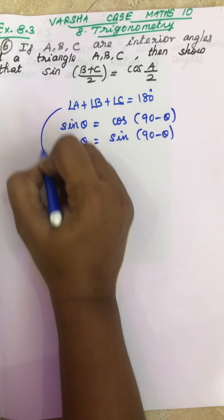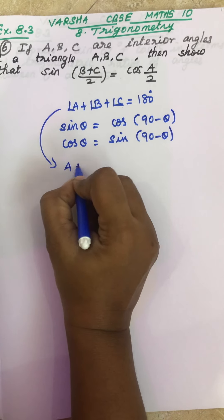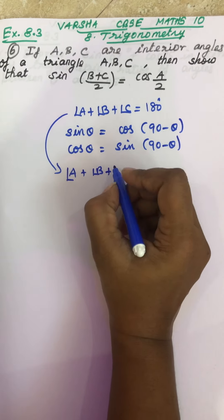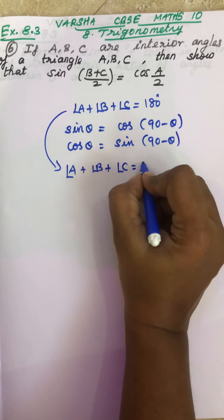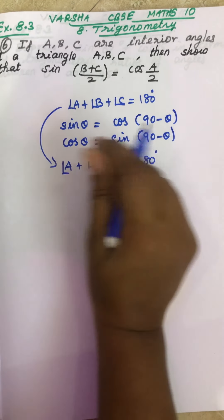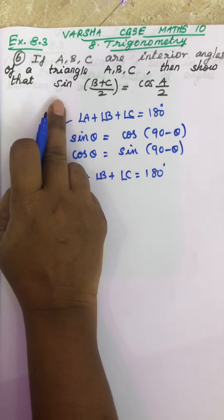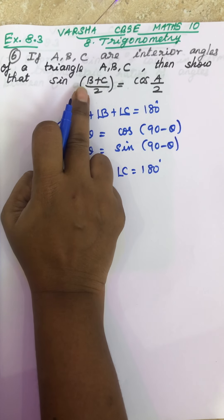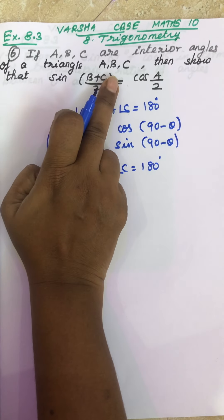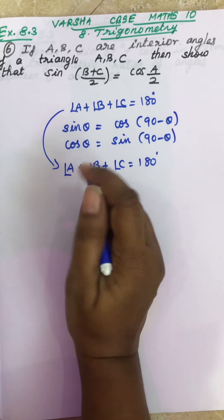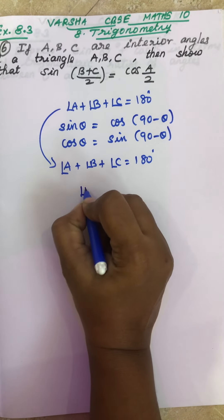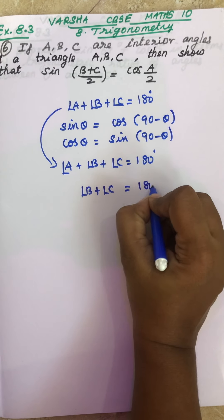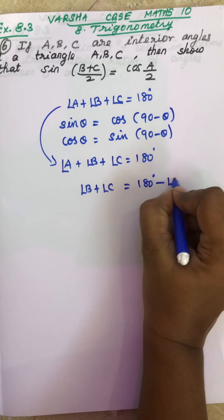Take this property: angle A + angle B + angle C = 180°. In this question, the left-hand side has only angle B and angle C. So take your B and C here — if A goes to that side, it will be minus A.